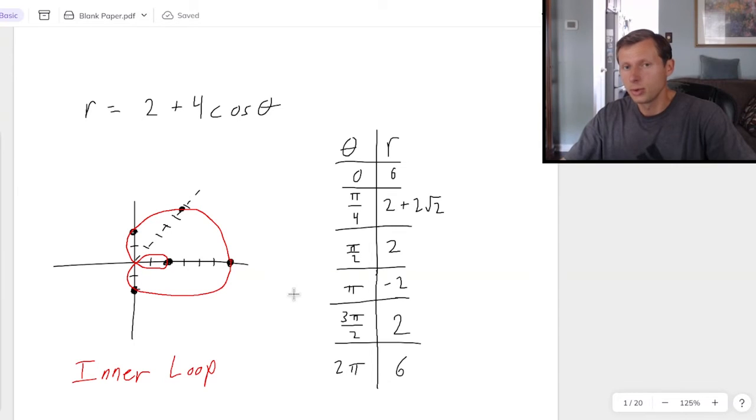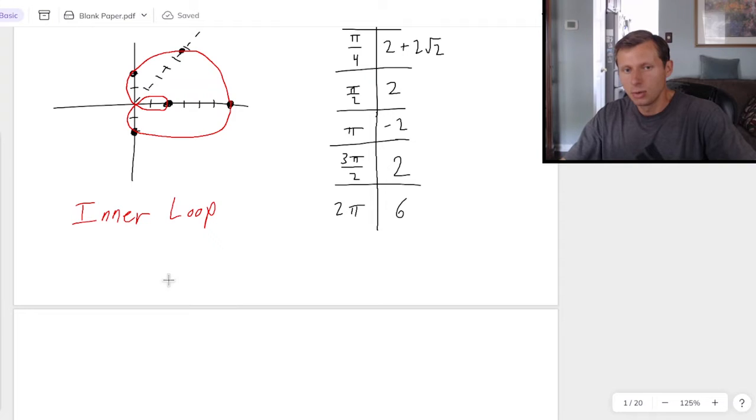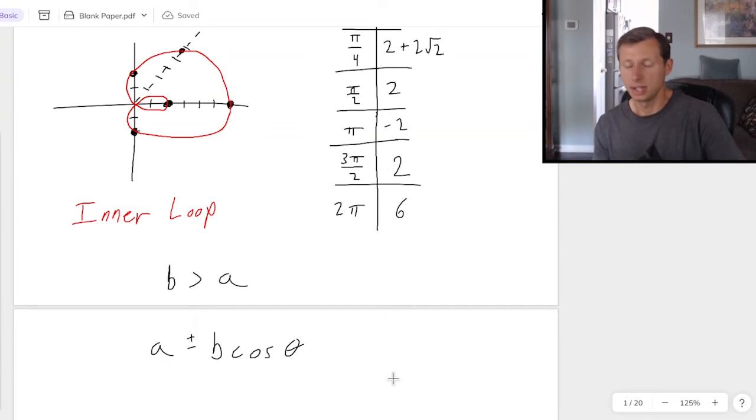And just so you know, you are going to have the inner loop limaçon whenever B is greater than A. In other words, whenever the part next to the sine or cosine is bigger than the other constant, that's when you get an inner loop. Now, there are three other cases of limaçons to talk about, which I will.